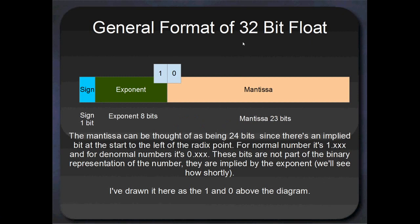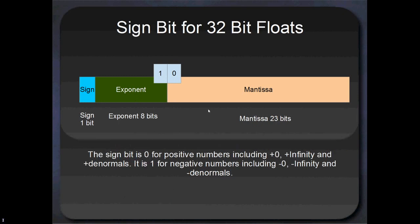So just a brief rundown on the general format for 32-bit floats again. We've got three different parts: the sign, the exponent, and the mantissa. The mantissa can be thought of as being either 24 bits if you include the implied bit — the 1 or the 0 — but usually we say that it's 23 bits wide. The 1 or 0 is implied by the exponent; we'll have a look at that in a second.